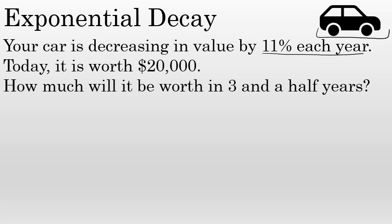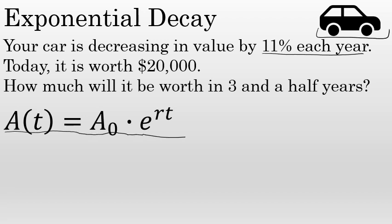To solve this problem we'll use the exponential growth and decay formula, which you can see on the screen now. It is read aloud: A(t) equals A sub zero times e to the power of r times t. Before I use this formula to solve the problem, I want to briefly discuss the parts of this equation.